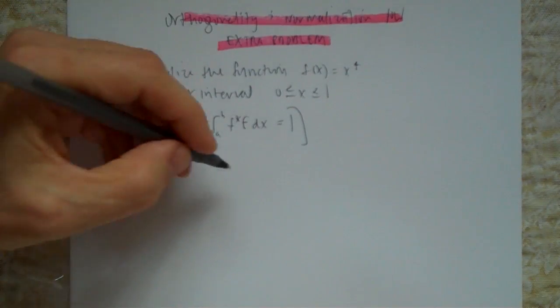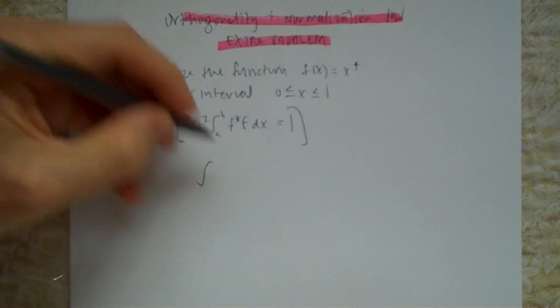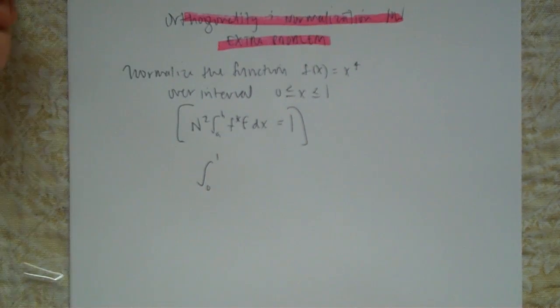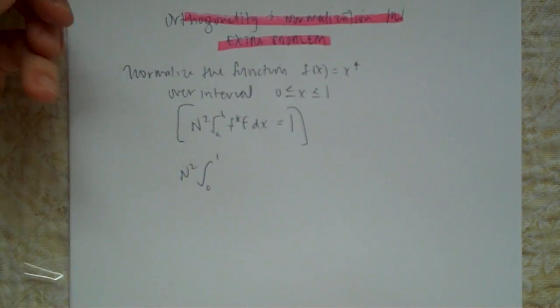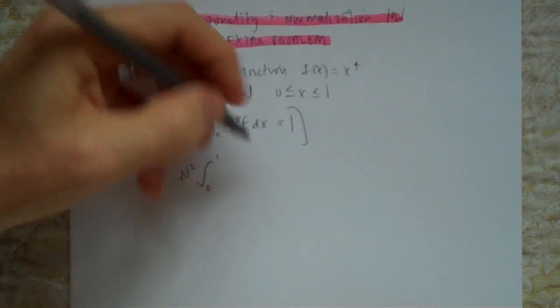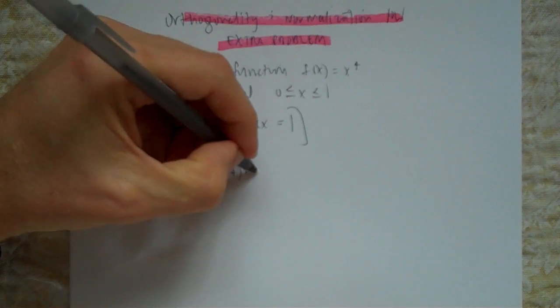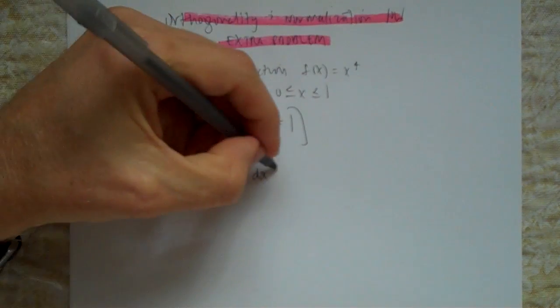In this case, f(x) = x^4 over the interval 0 to 1. So n squared is what I'm going to be solving for. And it's f squared, so it's going to be n squared times integral from 0 to 1 of x to the fourth squared dx equals 1.